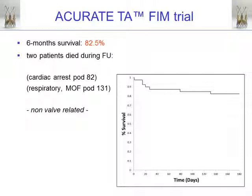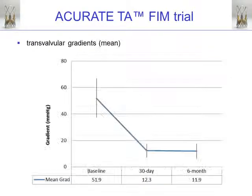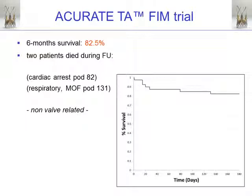Looking at the six-month follow-up, the Kaplan-Meier curve demonstrates a six-month survival of 82.5%, which compares well to known outcomes after CoreValve or Sapien implantation. It is quite remarkable that in a FIM trial, results already match current benchmarks. From 30 days to six months, two additional patients died — one on postoperative day 82 due to cardiac arrest, and another from respiratory problems followed by multi-organ failure on postoperative day 131. These events were non-valve-related.